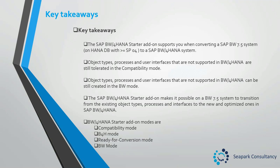Key takeaways. The SAP BW4HANA starter add-on supports you when converting a BW7.5 system on a HANA database to a BW4HANA system. Object types, processes, and user interfaces that are not supported in BW4HANA are still tolerated in the compatibility mode. Object types, processes, and user interfaces that are not supported in BW4HANA can still be created in the BW mode. The BW4HANA starter add-on makes it possible on a BW7.5 system to transition from the existing object types, processes, and interfaces to the new and optimized ones in BW4HANA. And finally, the BW4HANA starter add-on modes are compatibility mode, B4H mode, ready for conversion mode, and BW mode.